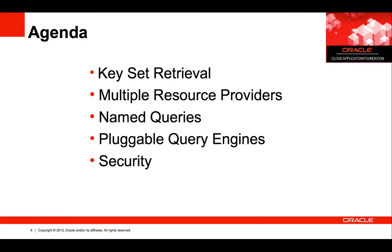Here is a list of enhancements added to Coherence REST in the 12.1.2 release. We added support for keyset retrieval, multiple resource providers, named queries, pluggable query engines, and security.